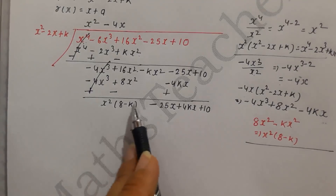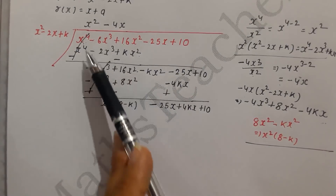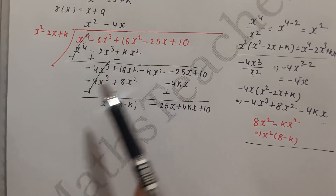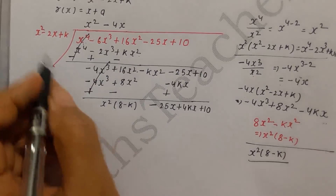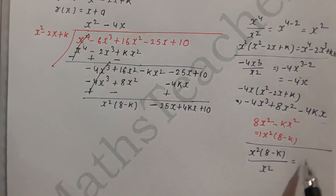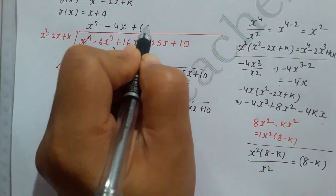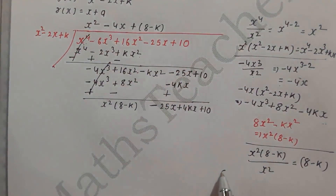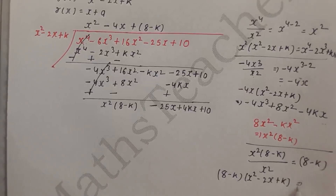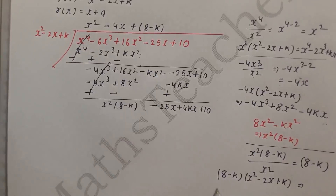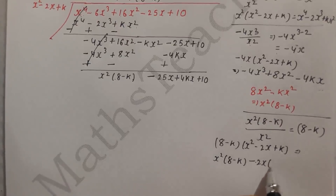Because we have two terms of the same degree, we take x² as common and divide (8 minus k)x² by x², the highest degree term of the divisor. This gives the next quotient term (8 minus k). Now we multiply (8 minus k) by the divisor x² minus 2x plus k: this gives (8 minus k)x² minus 2(8 minus k)x plus k(8 minus k).